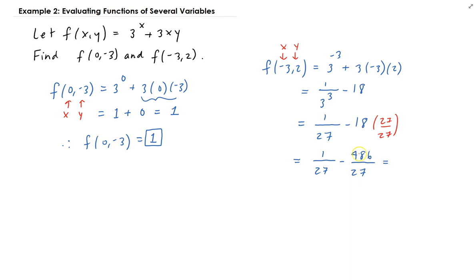So then you get 486, or 1 minus 486 will give us minus 485 over 27. Therefore, f of minus 3, 2 is equal to minus 485 over 27.